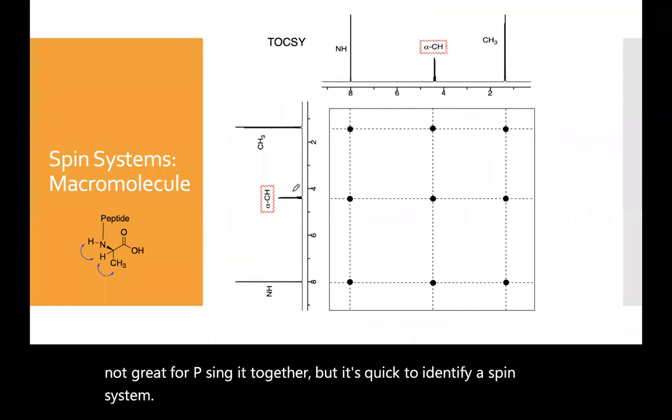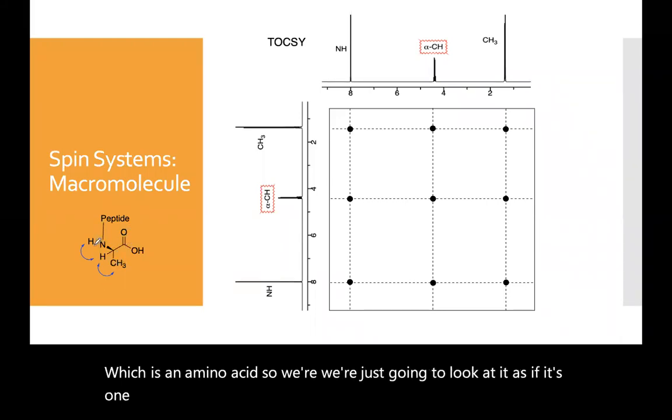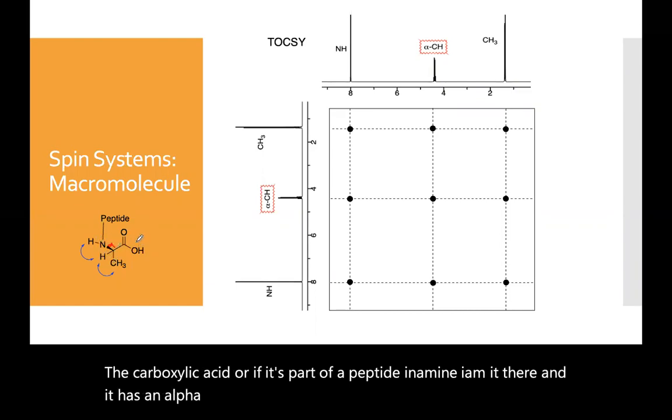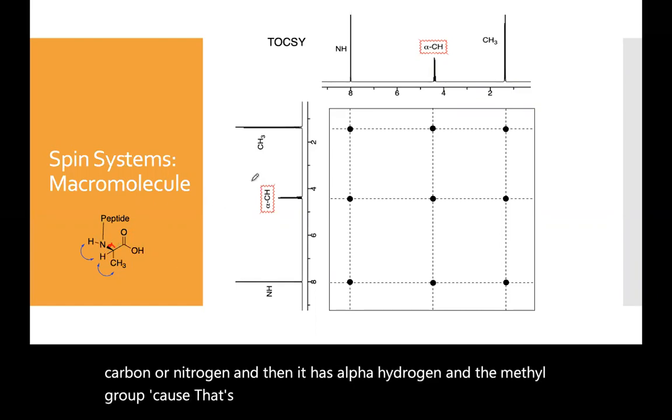So here's alanine, which is an amino acid. So we're just going to look at it as if it's one amino acid with the amine, the carboxylic acid, or if it's part of a peptide with amine there. And it has an alpha carbon. So amine, alpha carbon, carbonyl amine, alpha carbon, and nitrogen. And then it has an alpha hydrogen and the methyl group because that's the side chain in alanine.